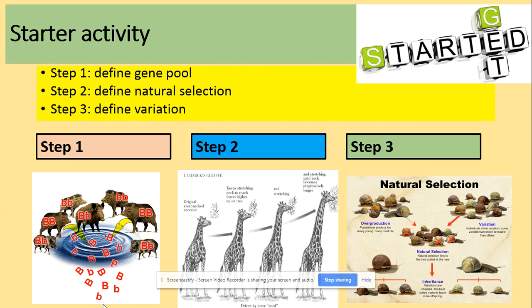Starting with the keywords: a gene pool, as we can see on the diagram, contains all of the alleles of all of the genes in the population. Natural selection is the process of identifying which alleles are most advantageous and selecting them. Variation is the process leading to natural selection.